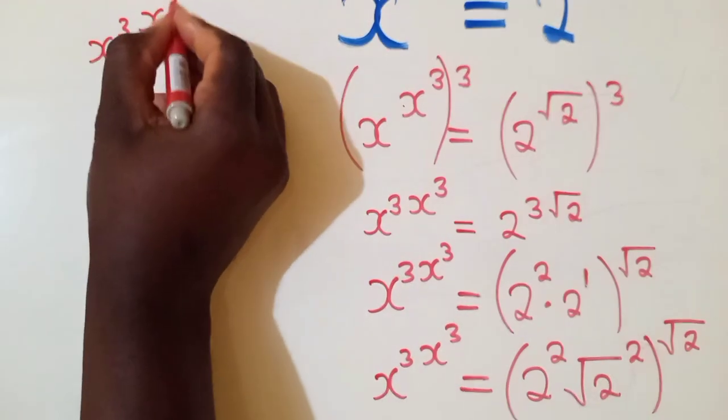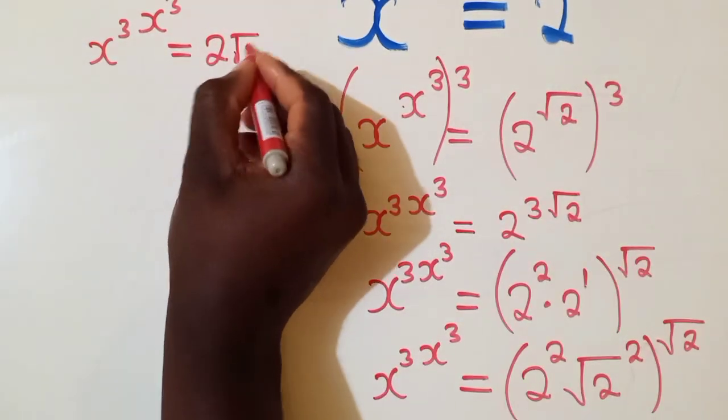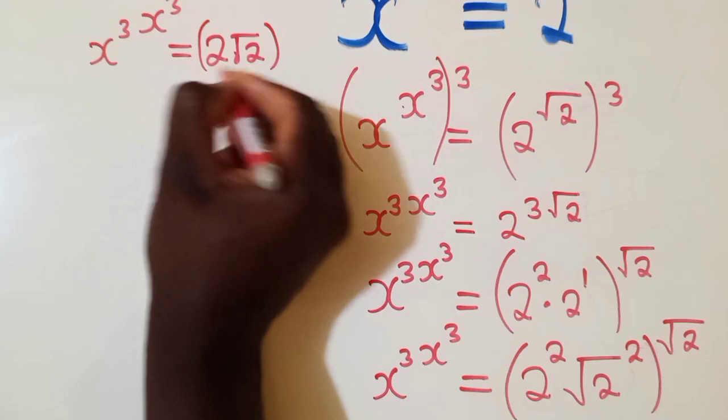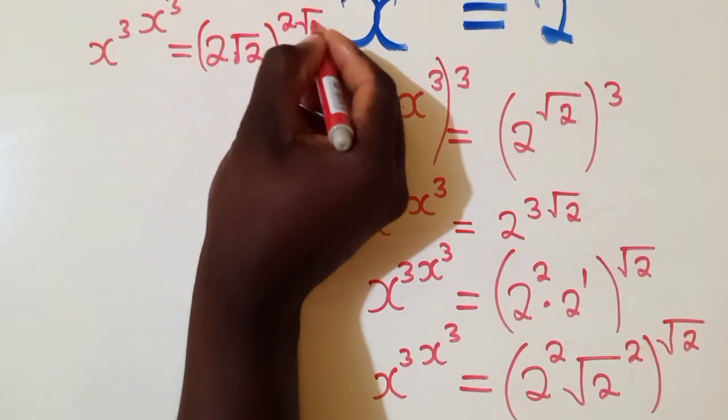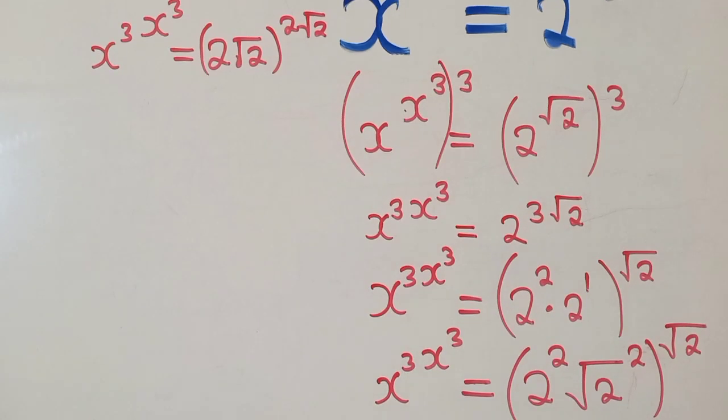So we shall have x power 3 x power 3 is equal to here 2 root over 2 and the power 2 root over 2. This is what we're getting. We know that the power - when you've got similar powers, this and this - you can factor them out. It can come here.